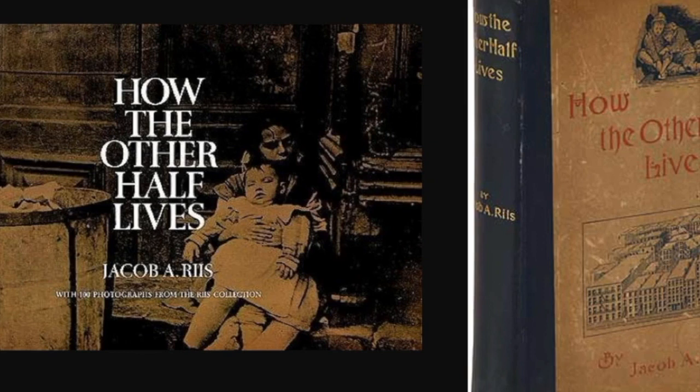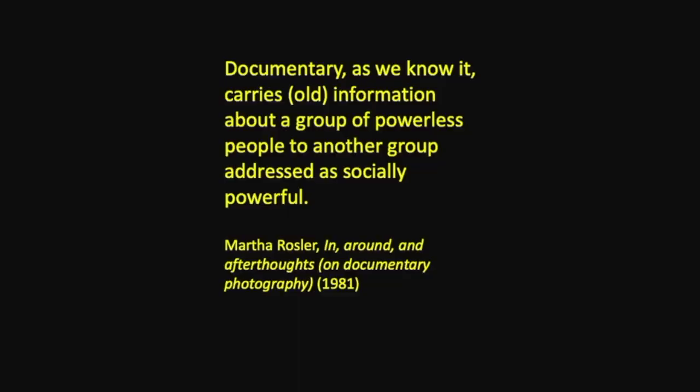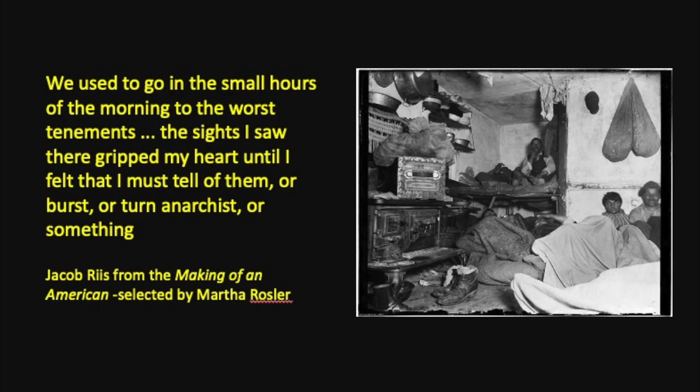Coming back to Riis, he's well known for the series 'How the Other Half Lives,' but also for actually instigating changes in the way tenement buildings were constructed, because he showed how awful the living conditions were around 1900 in New York City. Some of my work is built on my friend the theorist Martha Rosler's work — Martha's also a photographer. She makes the point that documentary as we know it carries old information about a group of powerless people to another group addressed as socially powerful. Her important critique in, around and afterthoughts on documentary photography really lays out a deep questioning of people like Jacob Riis, who, however well-intentioned, played a kind of voyeuristic role in the way he treated his subjects, really turning them into almost an object for the camera.